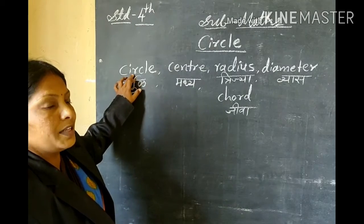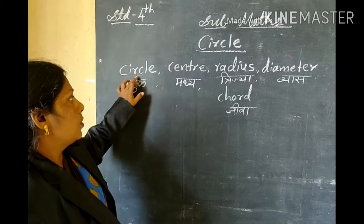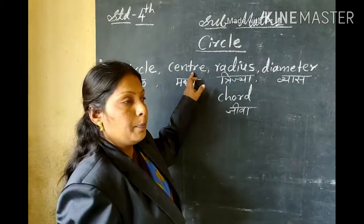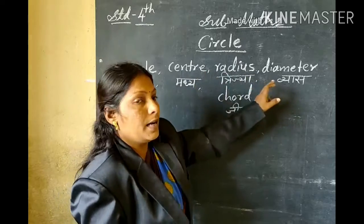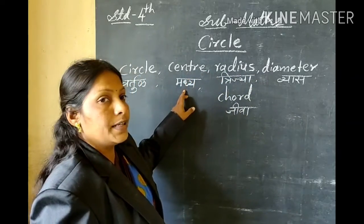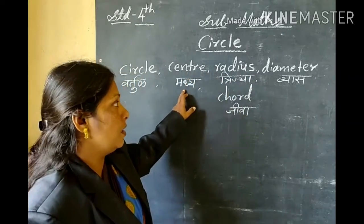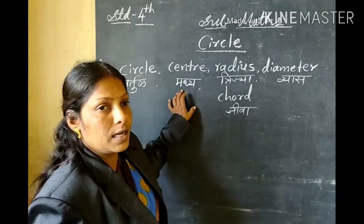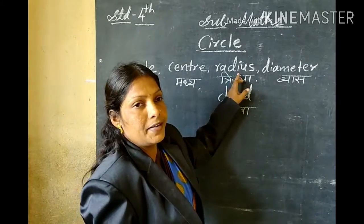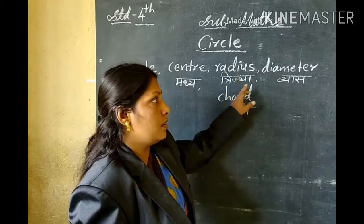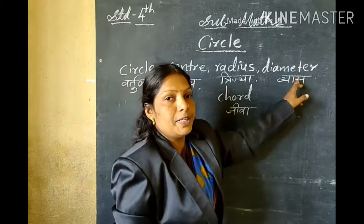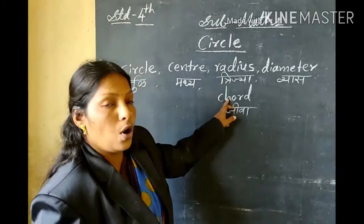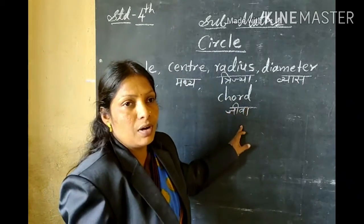Circle means 'vrutta' and the other parts are: center — center means 'madya'; radius — radius means 'trija'; diameter — diameter means 'vest'; and cord — cord means 'jiva'.